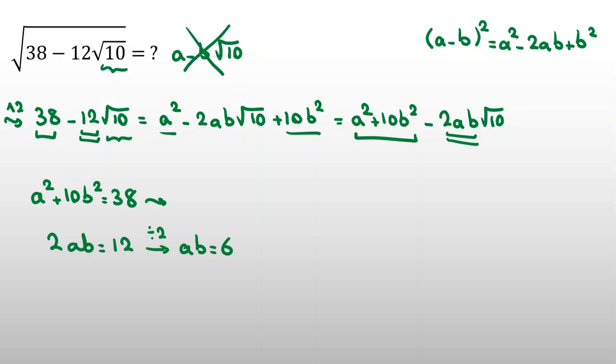The next one is that we write a root 2 minus b root 5. So, the product, again, will be root 10 for here and this here.